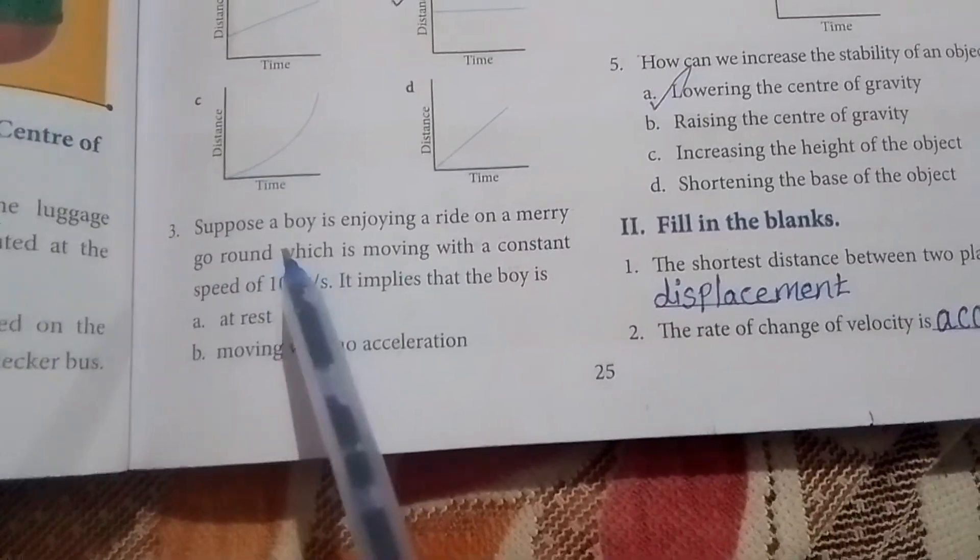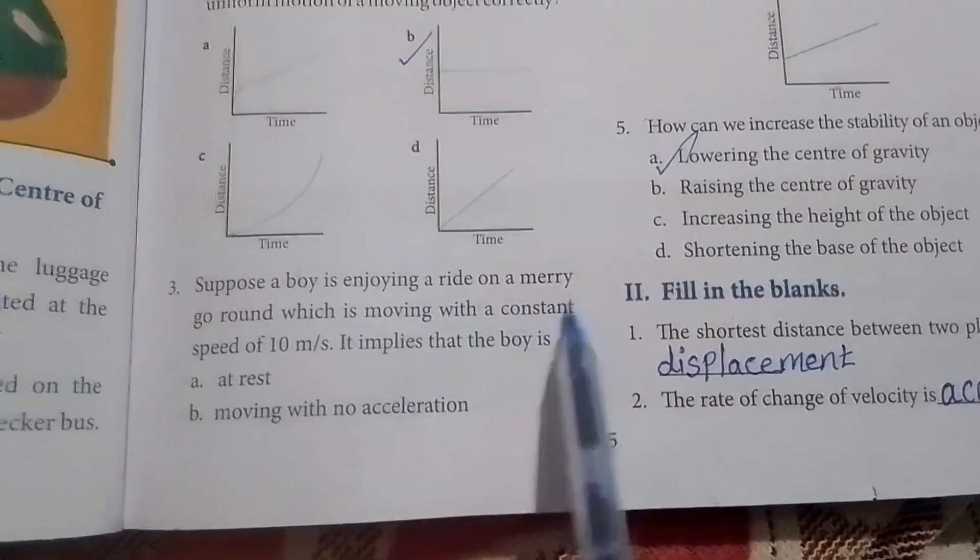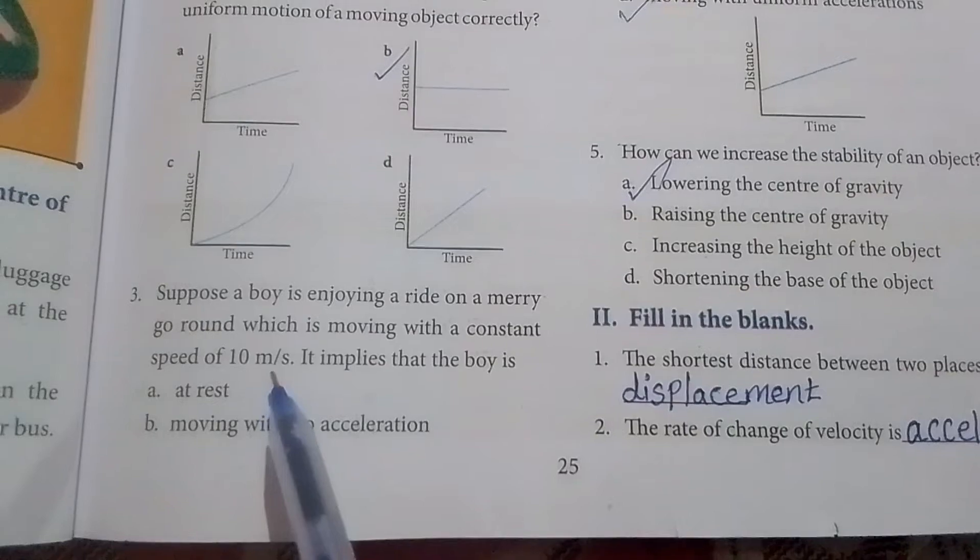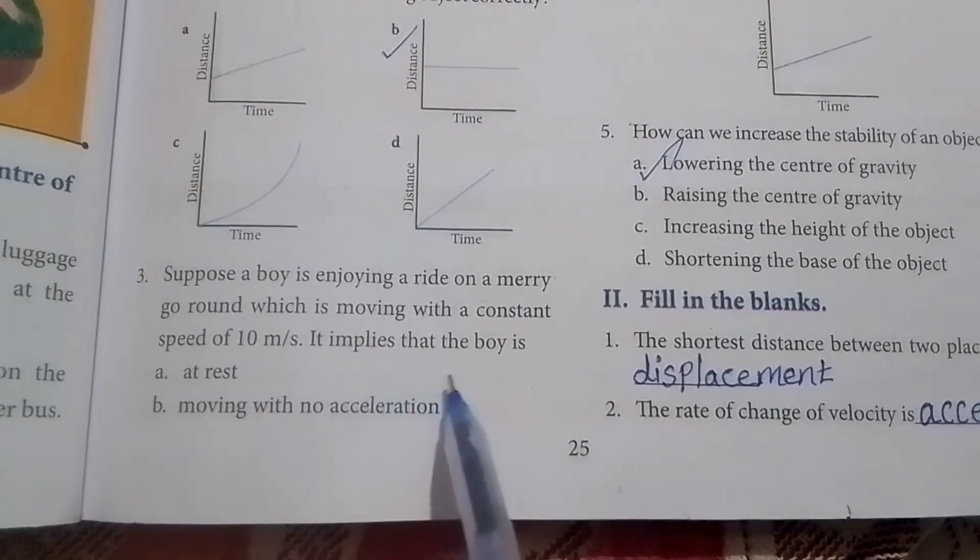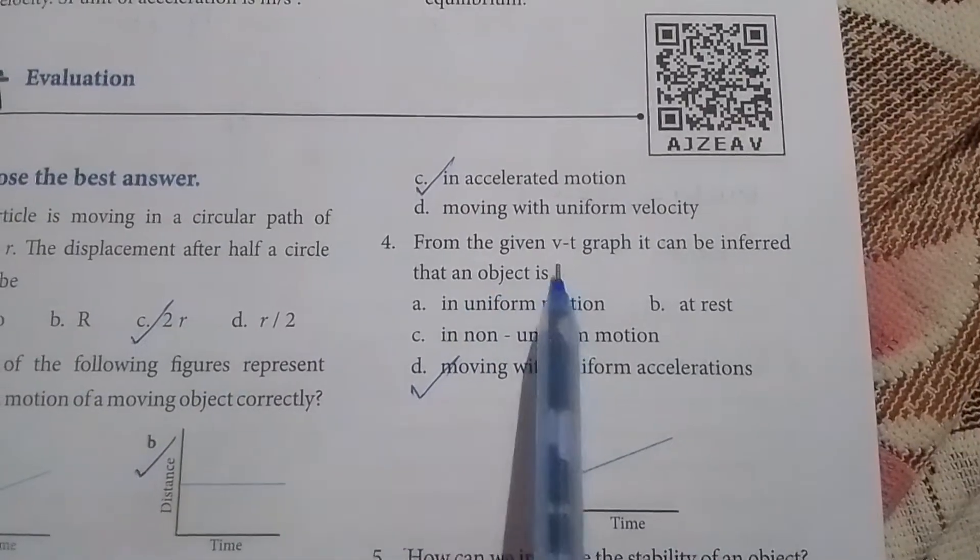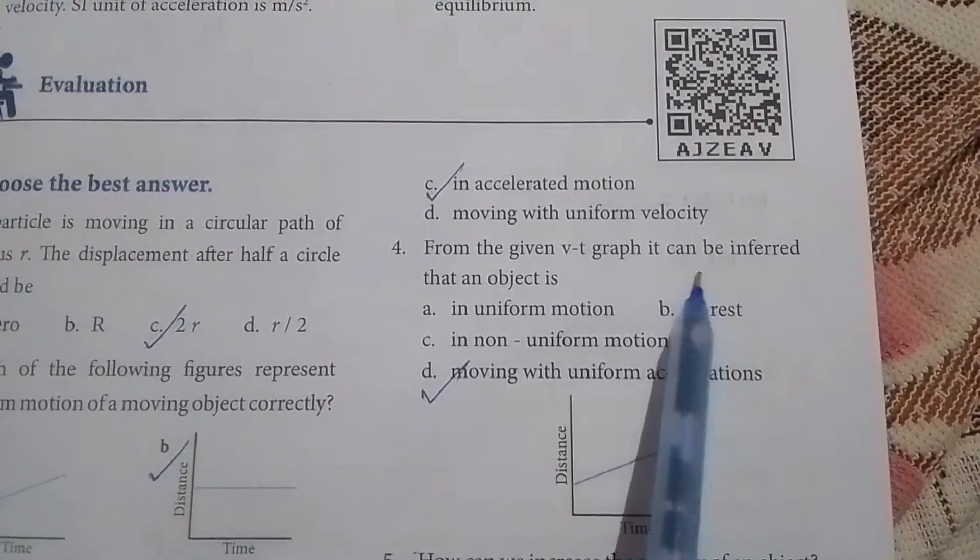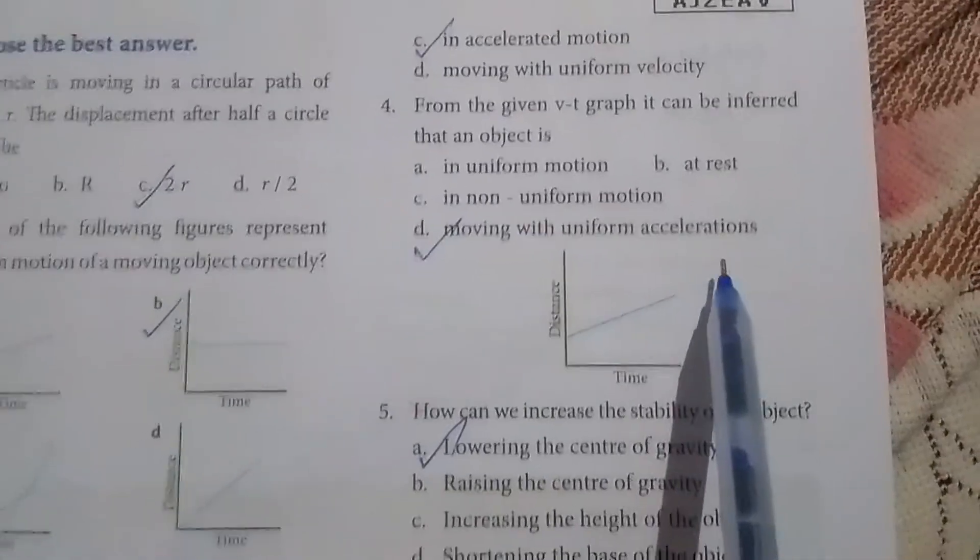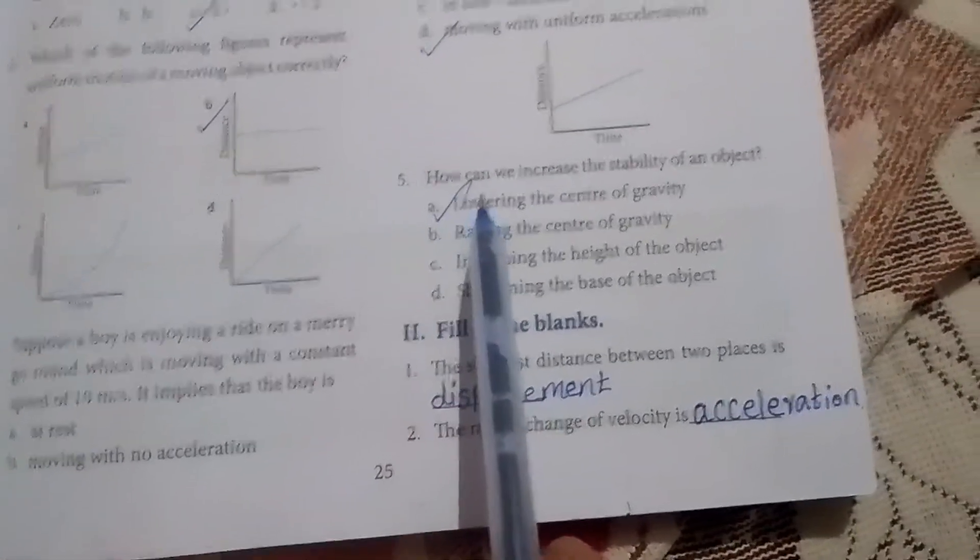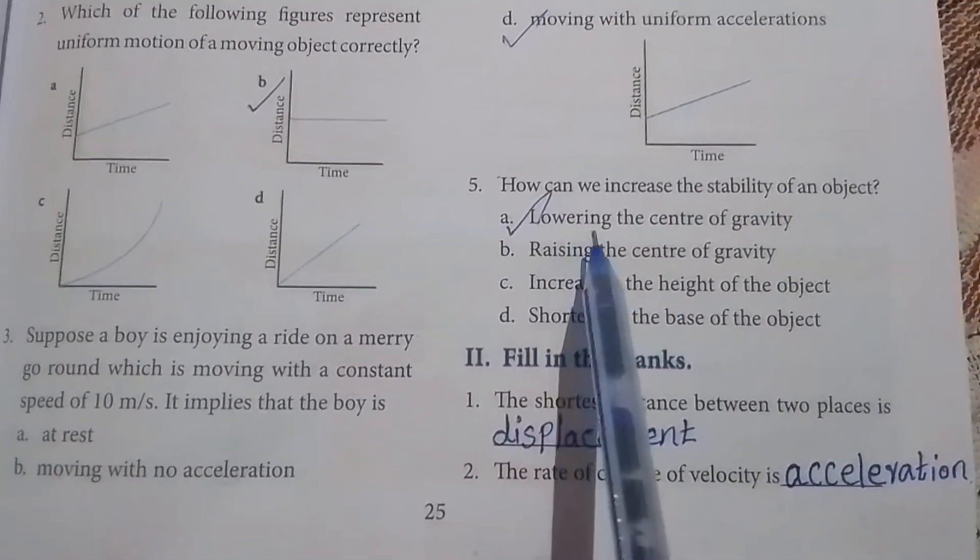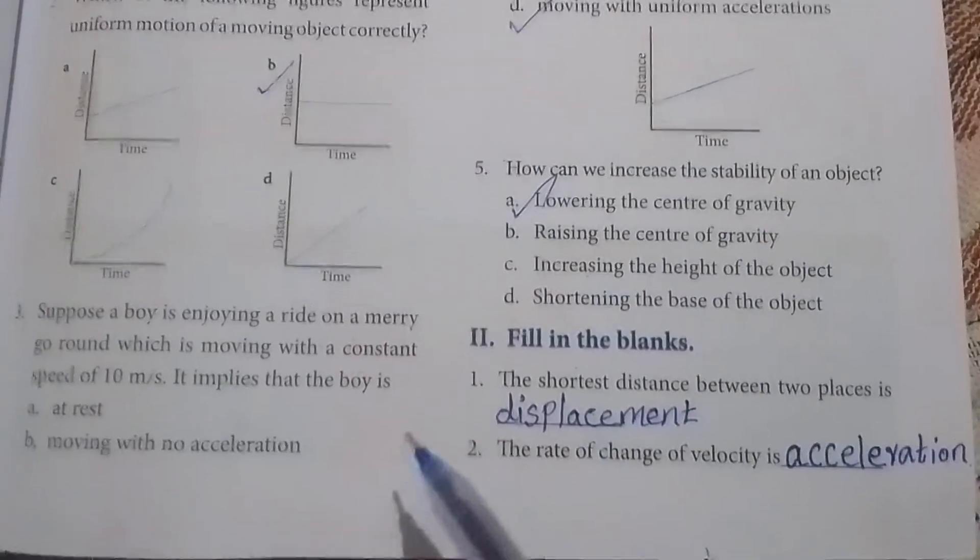Third one: Suppose a boy is enjoying a ride on a merry-go-round which is moving with a constant speed of 10 m/s. It implies that the boy is - answer, Option C, in accelerated motion. Fourth one: From the given VT graph, it can be inferred that an object is - Option D, answer, moving with uniform accelerations. Fifth one: How can we increase the stability of an object? Option A, answer, lowering the center of gravity.